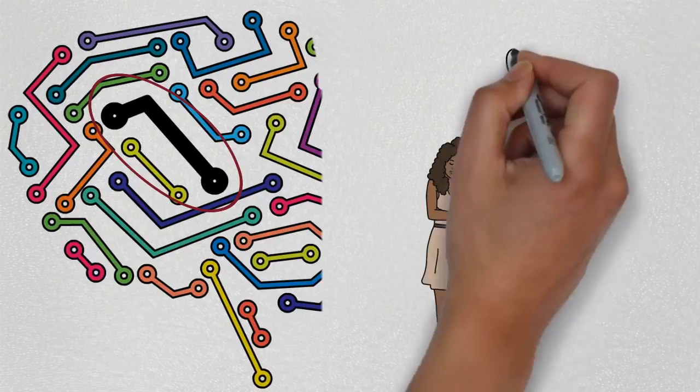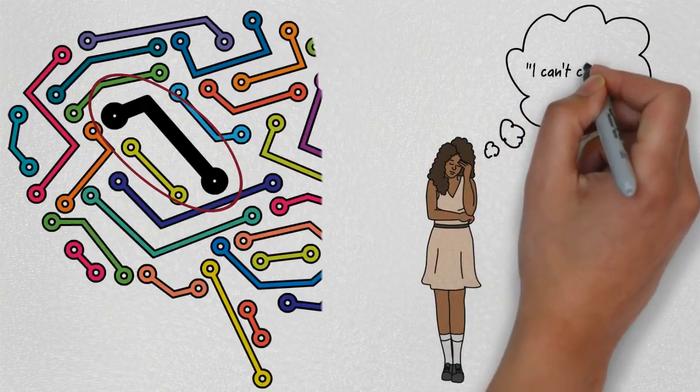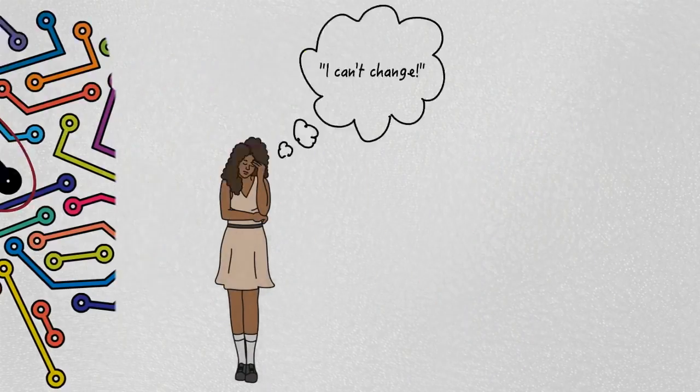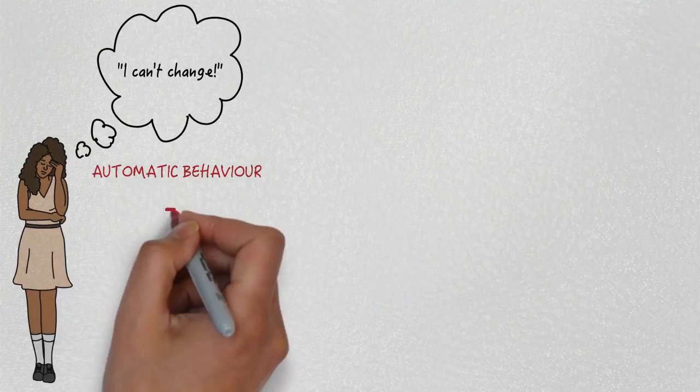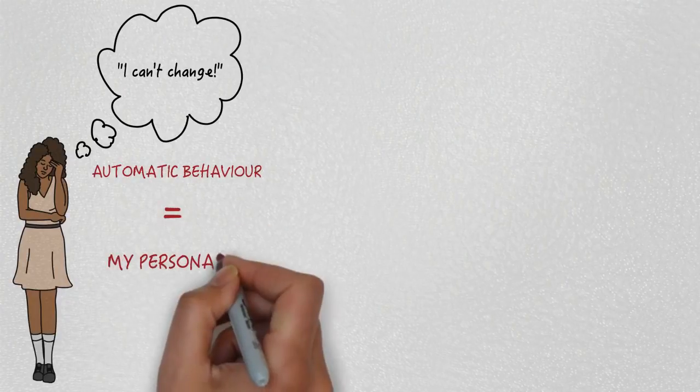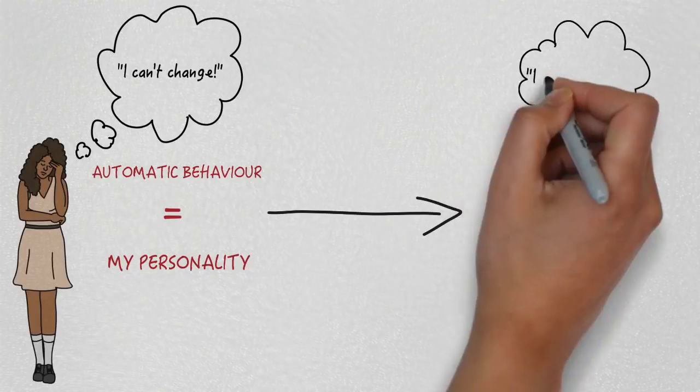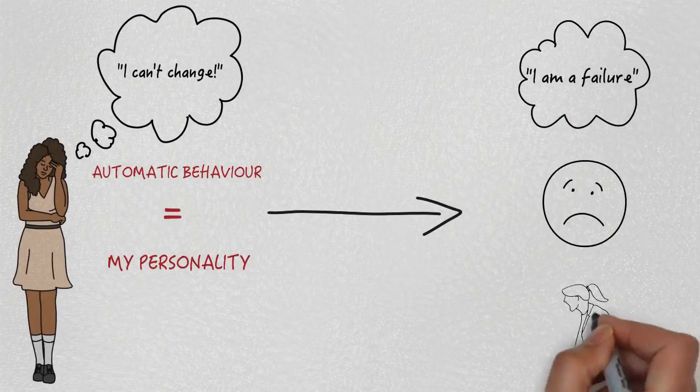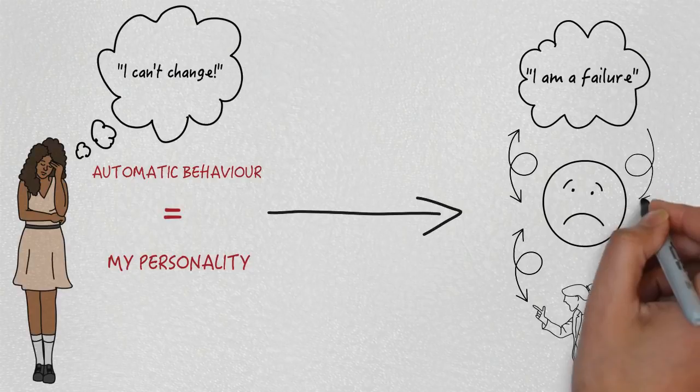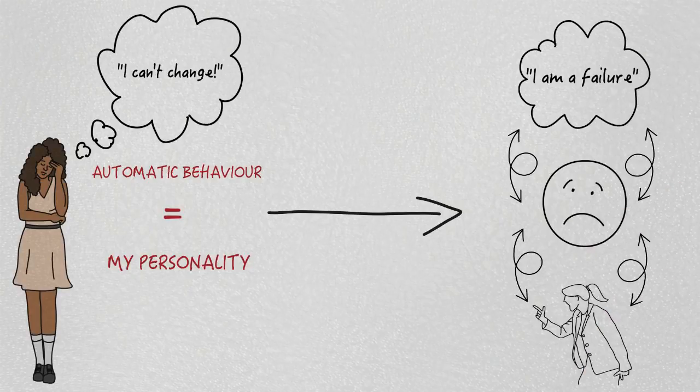So most people don't think they can change how they act and react in situations. This automatic way of acting is what we call personality, but mostly it's just those thoughts, emotions, and habits that we have repeated the most growing up and continue to repeat on a daily basis.